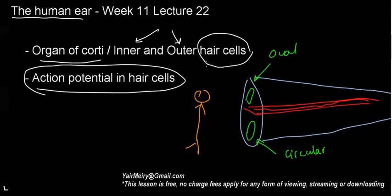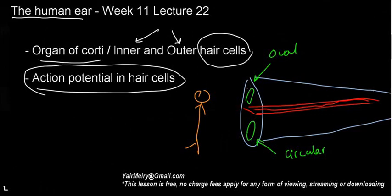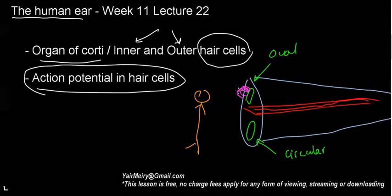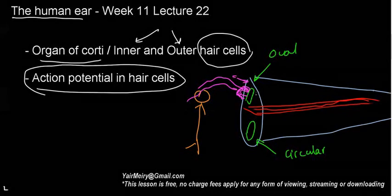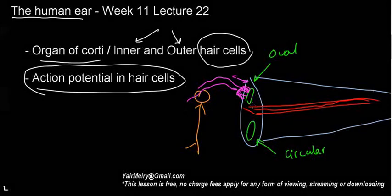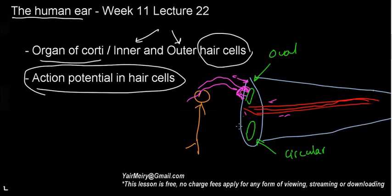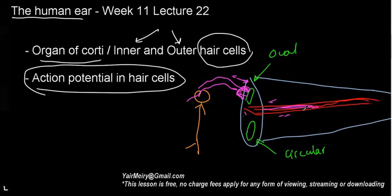What we really need to know is that the ossicles, namely the stapes, have a contact surface with the oval window. When the ossicles vibrate, the oval window goes in and out, and that means the membrane is also going to vibrate. So whenever sound is coming through to the ossicles, this membrane also vibrates.